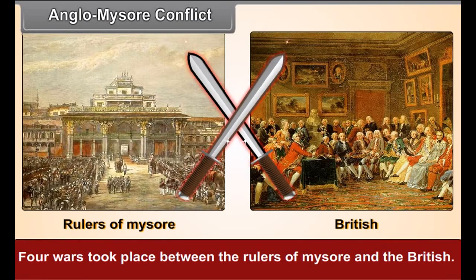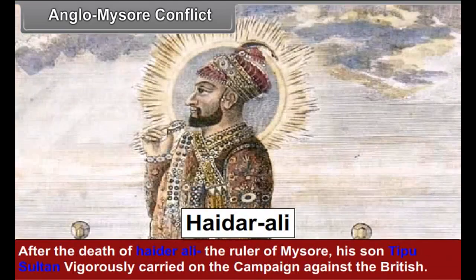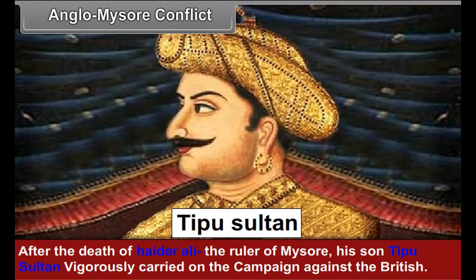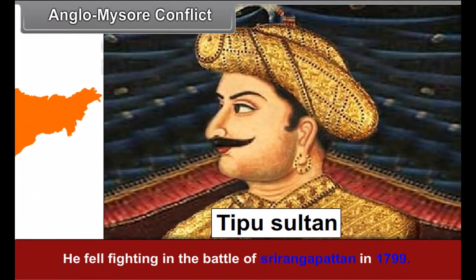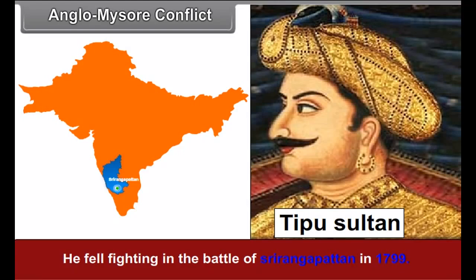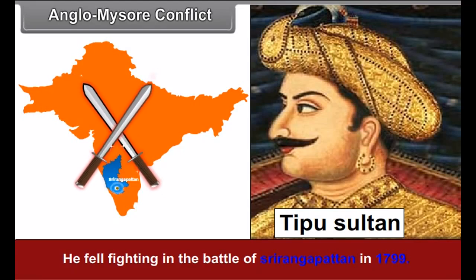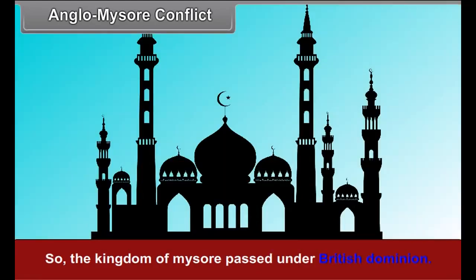Anglo-Mysore Conflict: Four wars took place between the rulers of Mysore and the British. After the death of Haider Ali, the ruler of Mysore, his son Tipu Sultan vigorously carried on the campaign against the British. He fell fighting in the Battle of Srirangapatnam in 1799. So, the Kingdom of Mysore passed under British dominion.